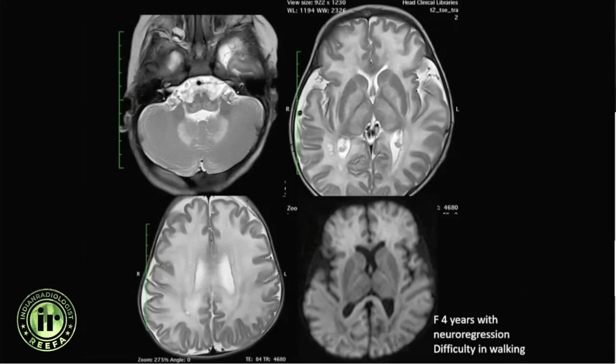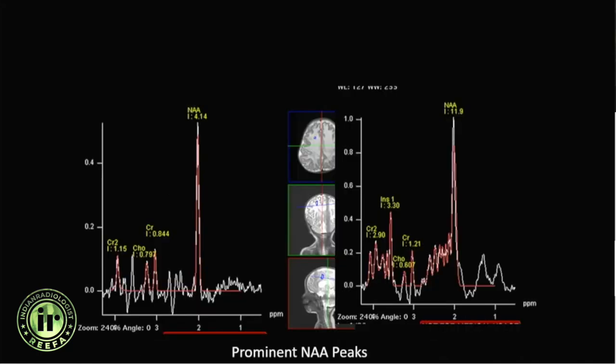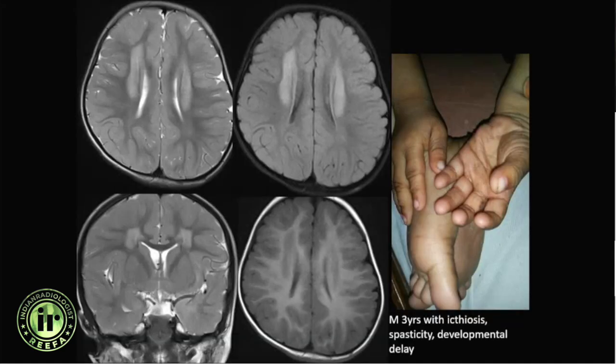A four-year-old with neuroregression showed diffuse white matter signal changes including the basal ganglia, globus pallidus, and thalamus, with a very prominent NAA peak on spectroscopy. Canavan's disease is one of the disorders in which spectroscopy helps in clinching the diagnosis.